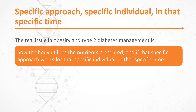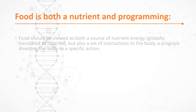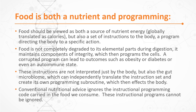One group of calories consumed as fat has a different outcome than the same number of calories consumed as protein or carbohydrate. The real issue in obesity and type 2 diabetes management is how the body utilizes the nutrients presented. Food is both a nutrient and a programming content. Food should be viewed as a nutrient — obviously translated as calories — but also as a set of instructions to the body, a program directing the body to a specific action. Food is not completely degraded to its elemental parts during digestion; it maintains integrity and goes on to program the cells. If it programs the cells in a corrupted way, it leads to outcomes such as obesity, diabetes, autoimmune disease, Alzheimer's, and cancer.